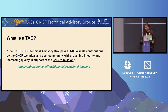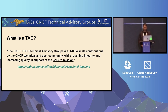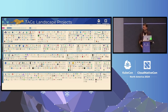Before I can get into that, I want to talk about what a TAG is — what is a Technical Advisory Group? The purpose of the TAGs is to really scale contributions from the community and across the responsibilities within the CNCF. There's no way that an 11-person TOC can be domain experts in every single project, and that's where the TAGs come in to scale the TOC and be able to provide project guidance and domain expertise.